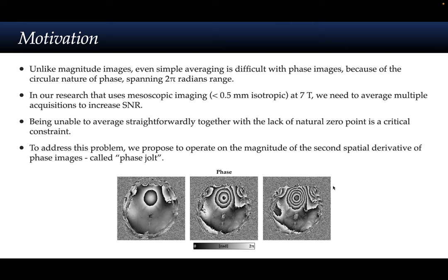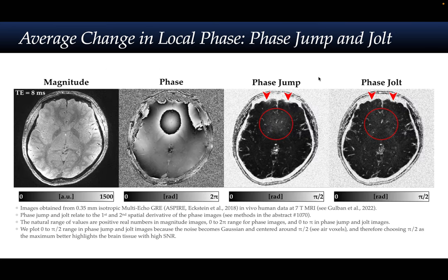Below, you are seeing the phase image acquired at three different echo times. Before we describe what phase jump and phase jolt actually are, we would like to give you a visual intuition first. On the left side, you see our magnitude image acquired at 8 milliseconds echo time, coming from a 0.35 mm isotropic multi-echo GRE acquisition.